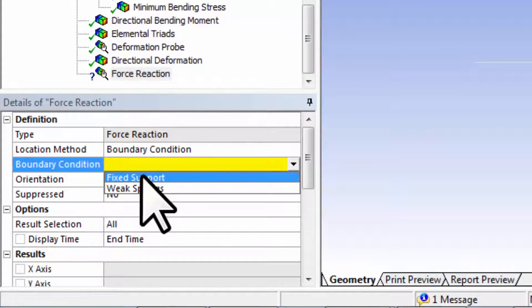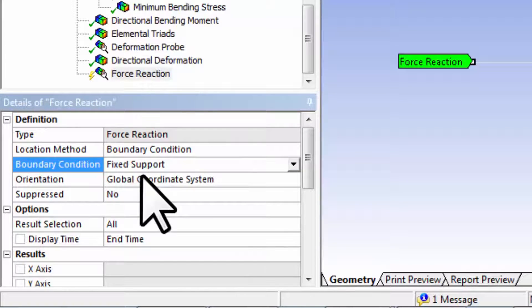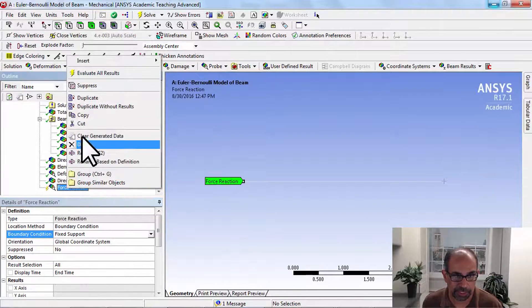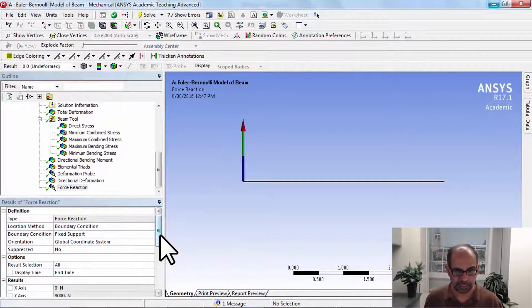If I scroll down here, that's 8,000 Newtons in the global coordinate system, and that balances the 8,000 Newtons load that we applied.